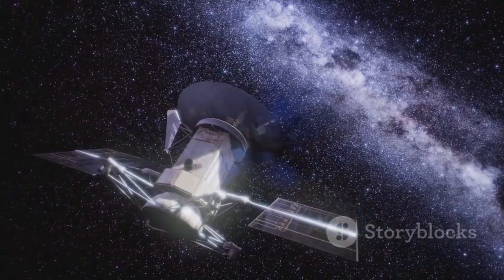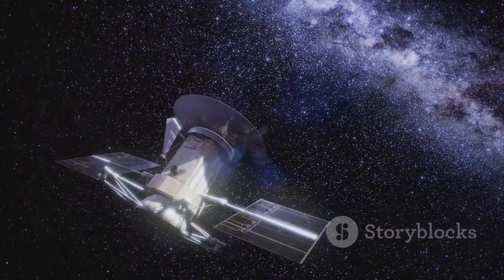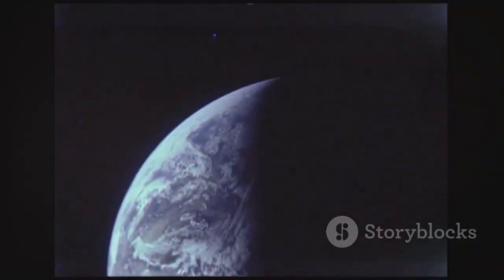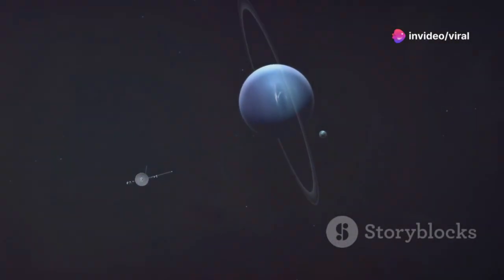Today Voyager 1 is in interstellar space, farther than any human-made object has ever traveled. It's over 15 billion miles from Earth. Light takes more than 22 hours to reach it. The Sun, from Voyager's view, is just another star.